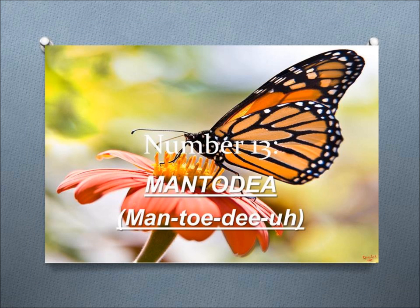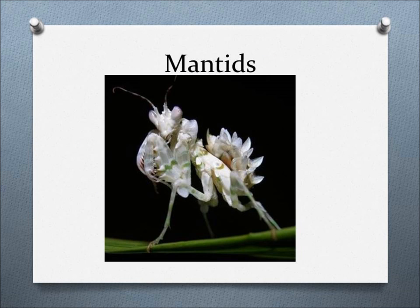Number 13, Mantodea. This order includes mantids, which are ferocious predators that target insects as their primary prey, but larger mantids consume small scorpions, lizards, frogs, birds, snakes, fish, and even rodents.